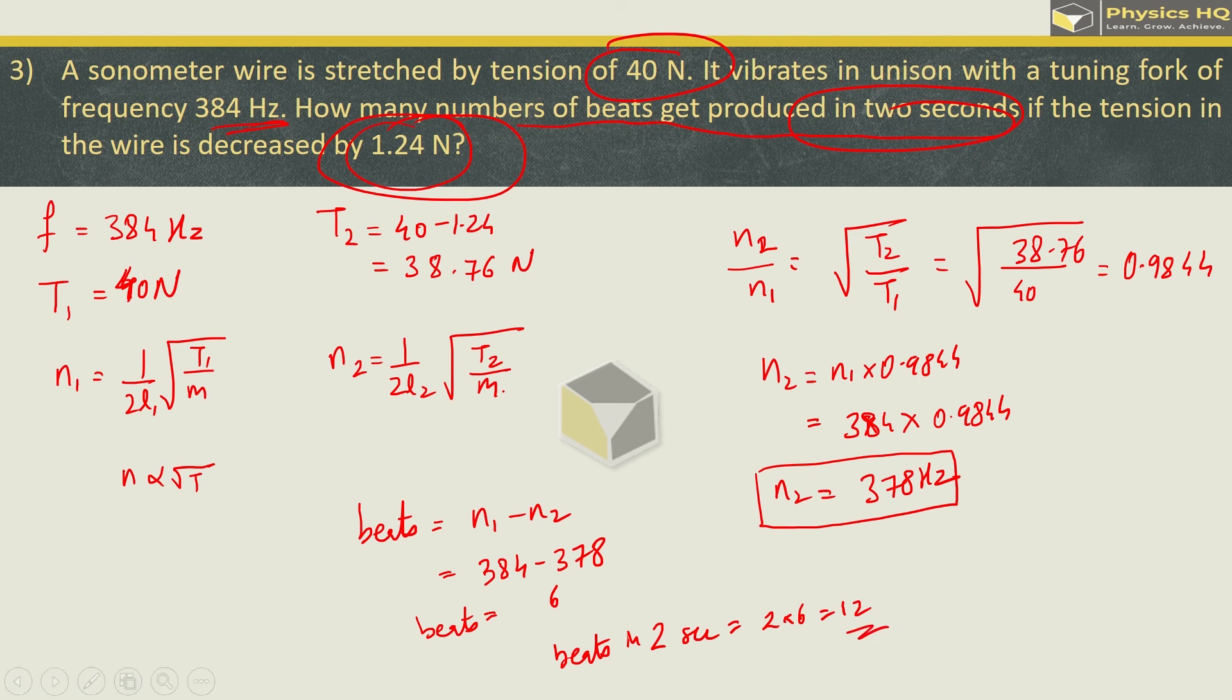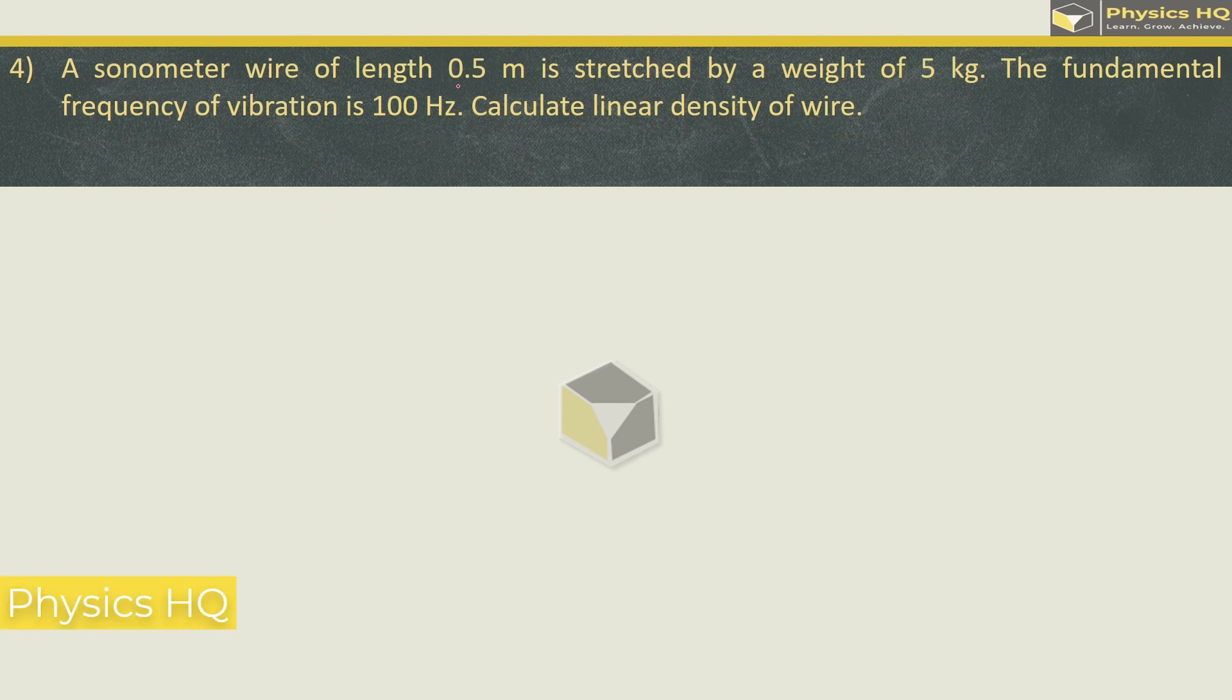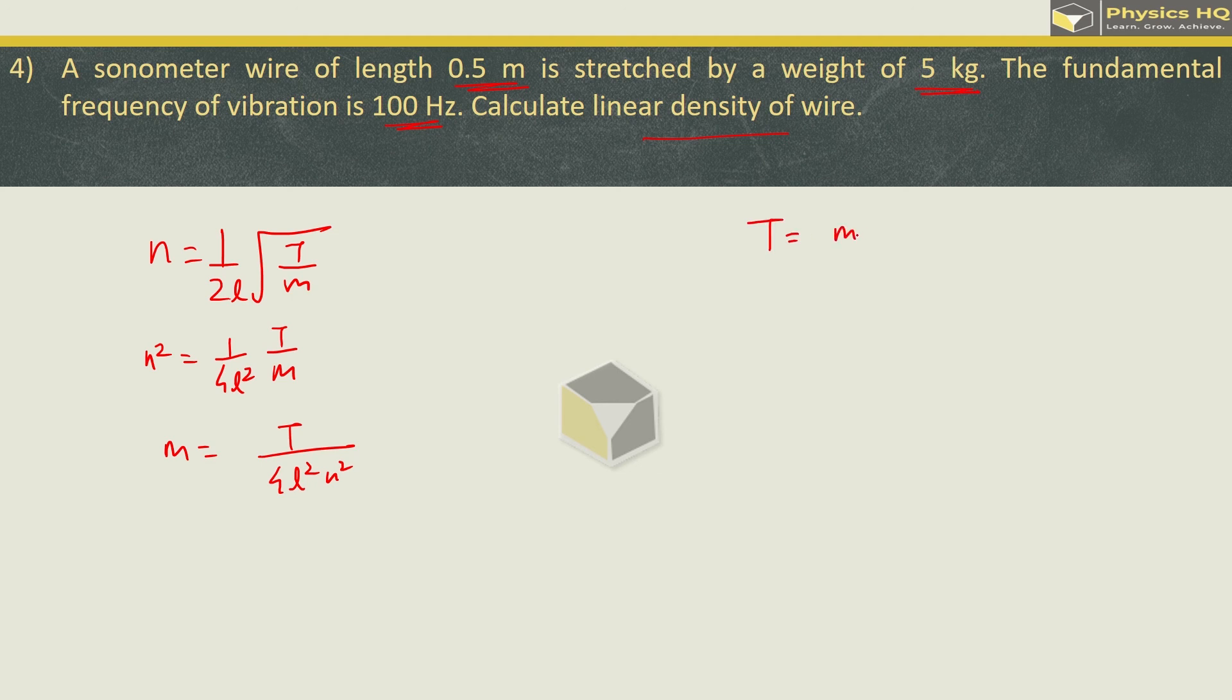A sonometer wire of length 0.5 meter is stretched by a weight of 5 kg. The fundamental frequency of vibration is 100 hertz. Calculate the linear density or mass per unit length m. n is equal to 1 upon 2L root of T by m. Squaring, n square is equal to T upon 4L square m. So m is equal to T upon 4L square n square.